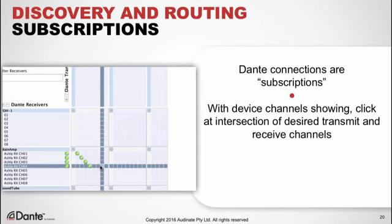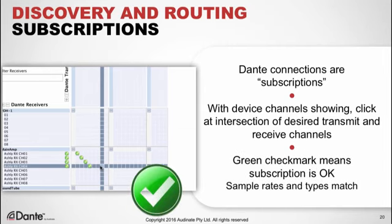These devices are both set to use a default 48 kHz and 24-bit depth. To subscribe a transmitter channel to a receiver channel, we simply click at the intersection on the grid. A green checkbox appears, and that means we're connected. If our sample rates and bit depths did not match, we would see an error message instead of the green check mark. We've made several subscriptions in this example just by clicking at the intersections.